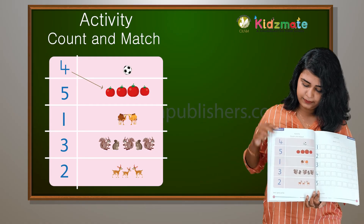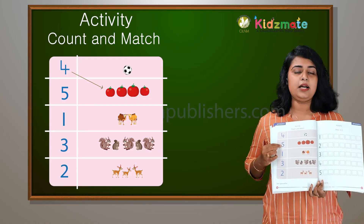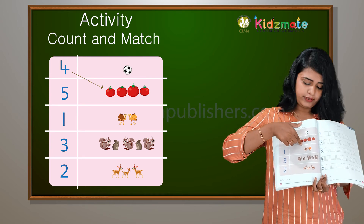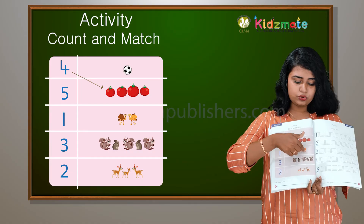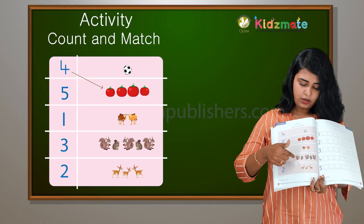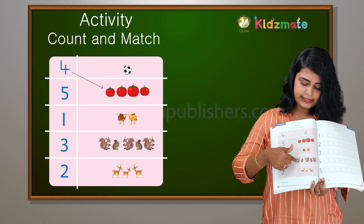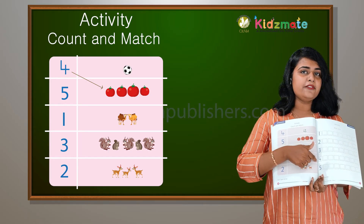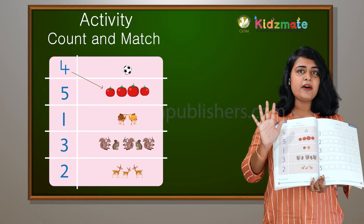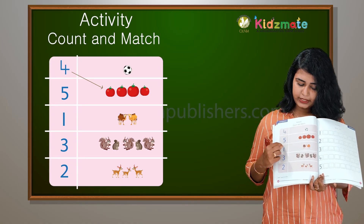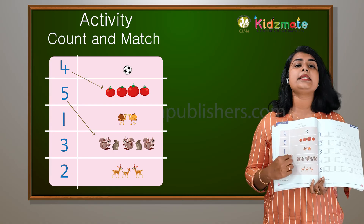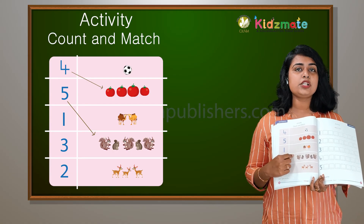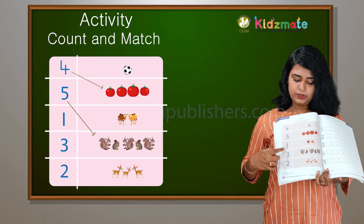And 5 — the next number is 5. This is 4 we already know. How many squirrels are here? 1, 2, 3, 4, 5 — 5 squirrels. Correct! So we can match that also. 5 squirrels should be matched.